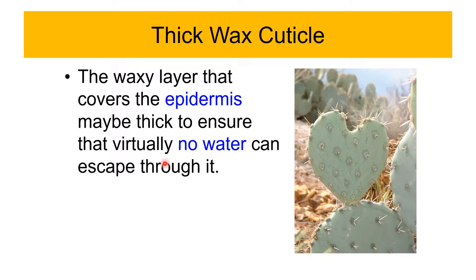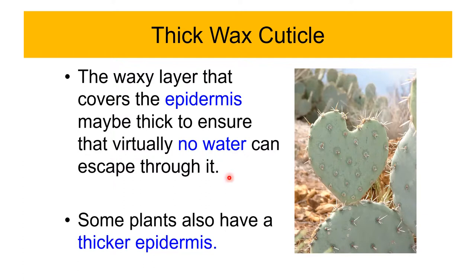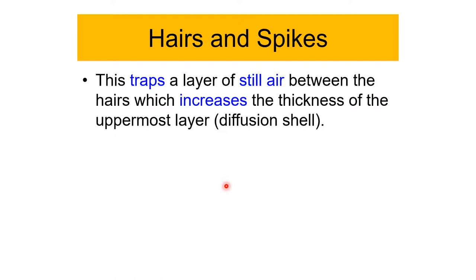Hairs and spikes on leaves trap a layer of still air between the hairs, increasing the thickness of the uppermost layer. The epidermis itself is one layer, and the trapped air acts as an insulator. This reduces the water vapor potential gradient. Xerophytes also have sunken stomata — stomata at the base of a pit creates local humidity, decreases exposure to air currents, and decreases water loss.